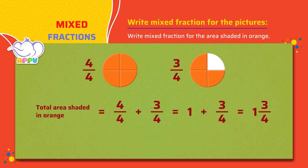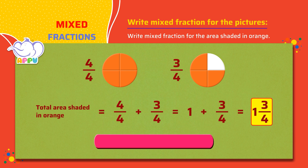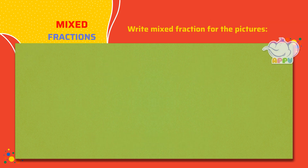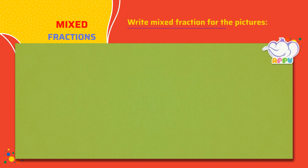So the total shaded area in orange is 1 3/4. Excellent! Write mixed fraction for the area shaded in red.